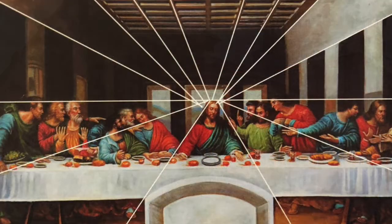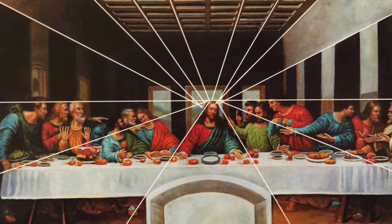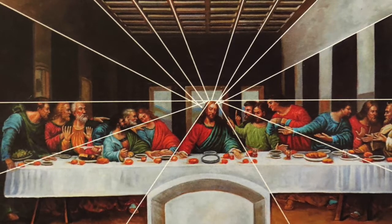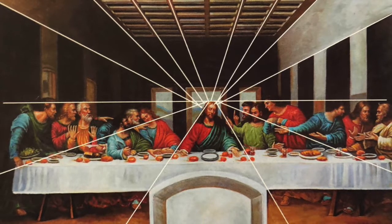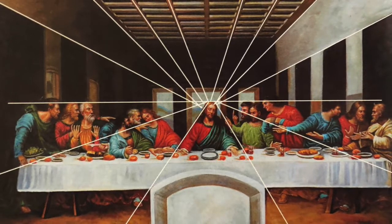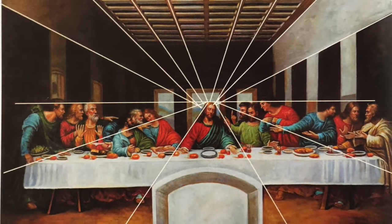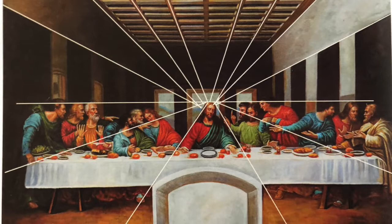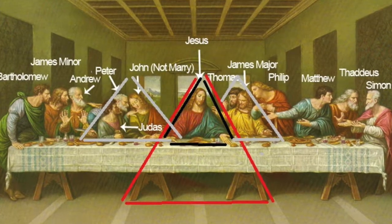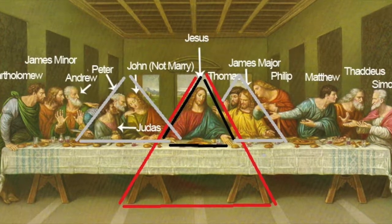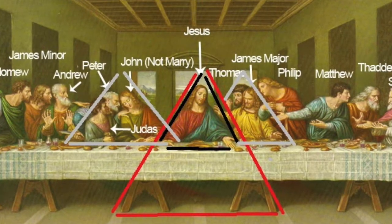Da Vinci used one-point perspective, which involves all the lines in the painting converging in one place, known as the vanishing point. This technique was used to emphasize the importance and central position of Christ. The lines all converge in the center, drawing the viewer to look at Christ from all angles. The painting also contains a lot of shapes, like squares and triangles, along with different types of angles that help with the perspective.